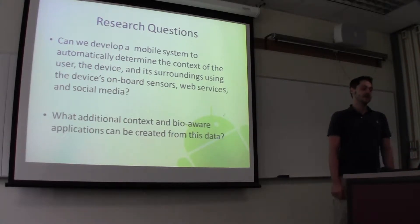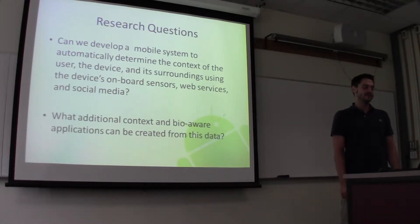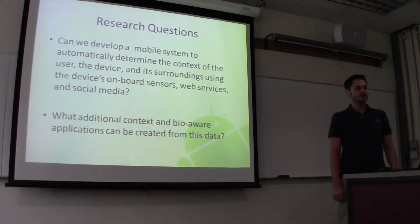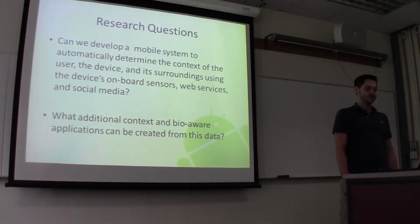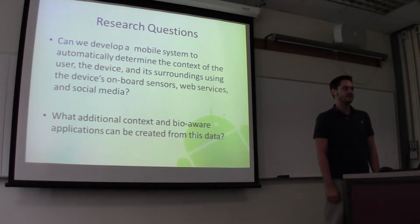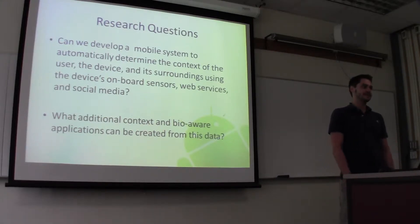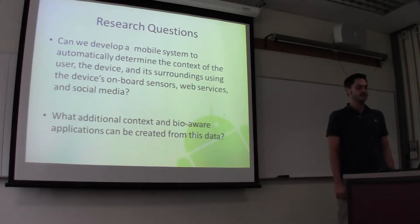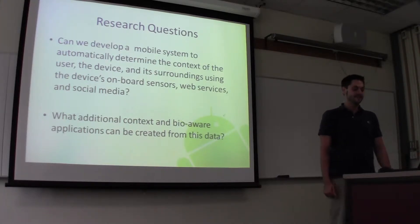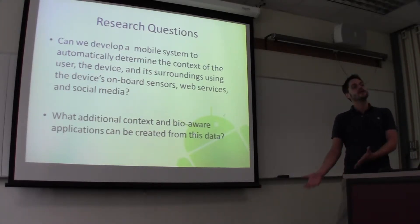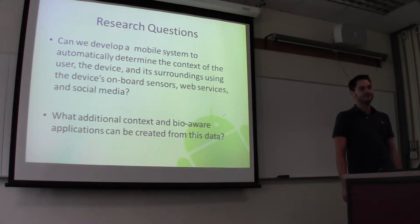I'll start with some research questions. Largely, this is trying to develop a mobile system that can determine the context of the surroundings of the user, using only the sensors, web services, and social media. And assuming that we can create such a system, the next question is clearly going to be what additional context-aware applications can we create using this contextual data that we have derived from our surroundings?